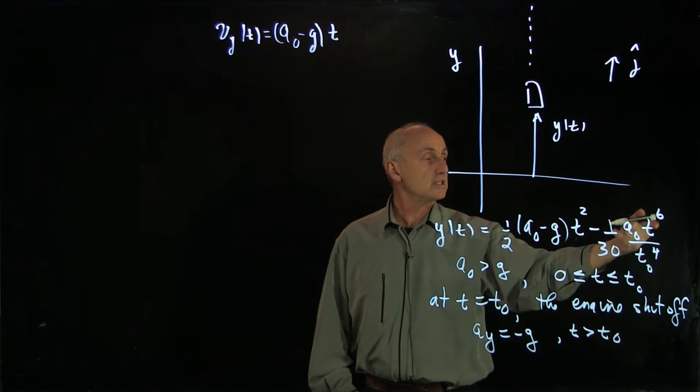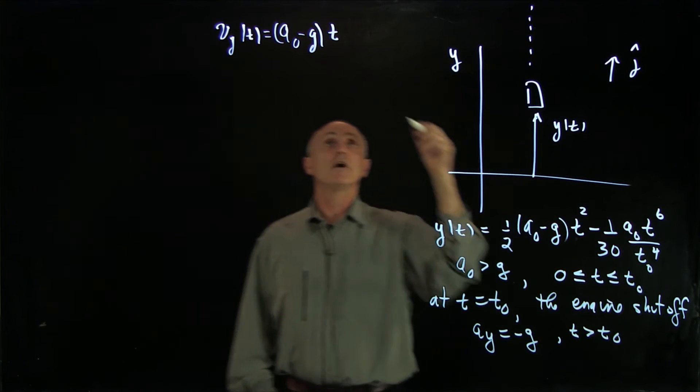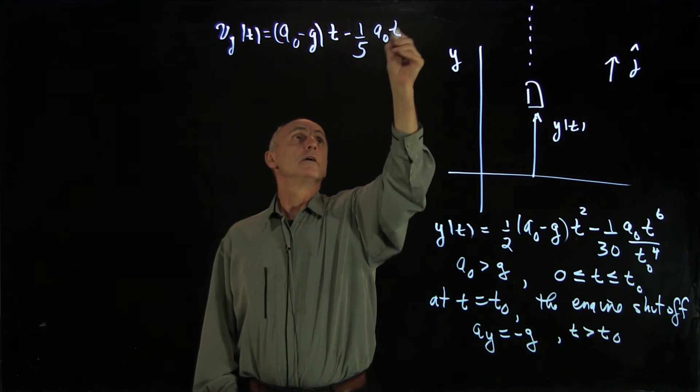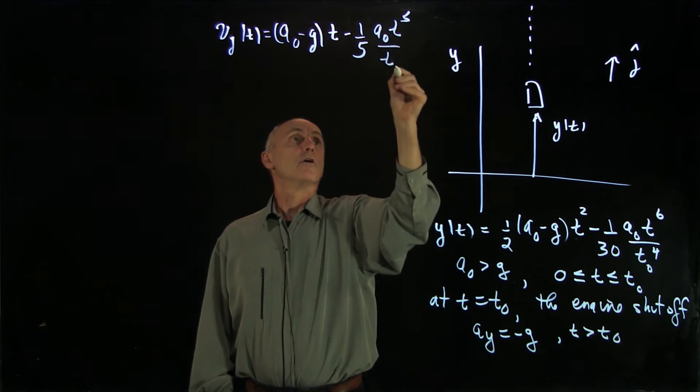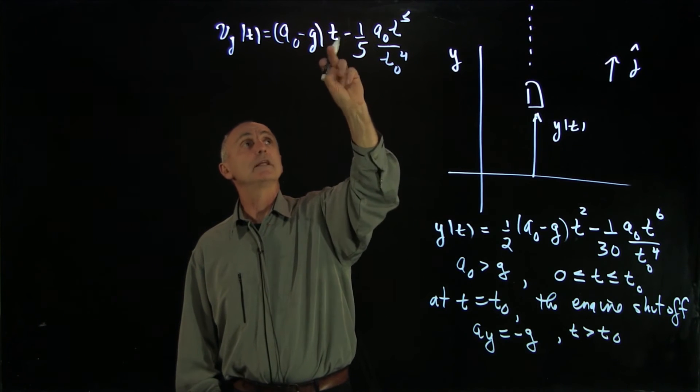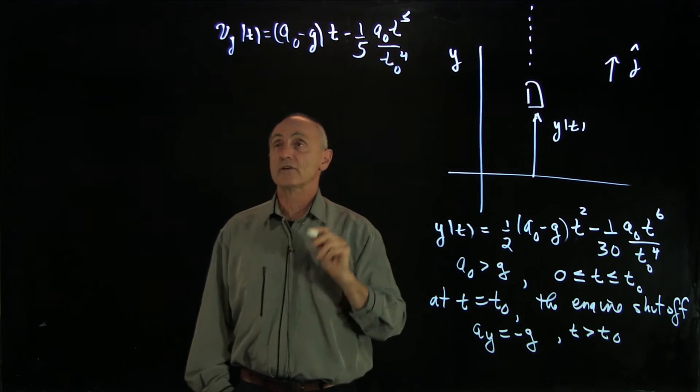When we differentiate t to the sixth, the sixth over 30 gives us a factor of 1 over 5. So we have minus 1/5 times a0 t to the fifth over t0 to the fourth. This is a combination of a linear term and a term that is decreasing by this t to the fifth factor.